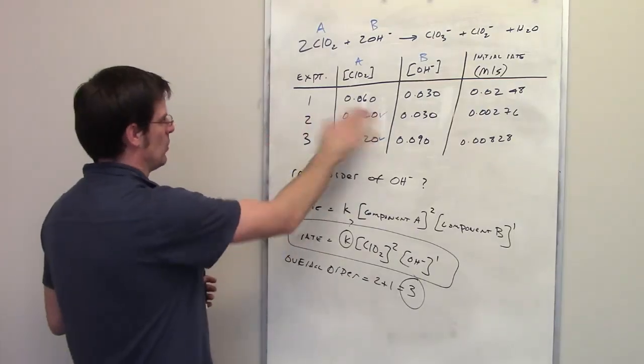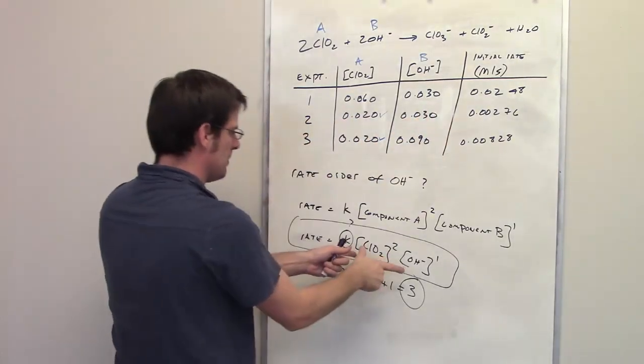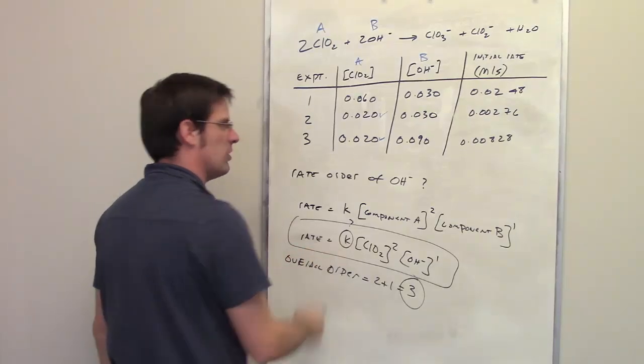all I have to do is go up to the table and pick any of these experiments, 1, 2, or 3, whichever one I like, plug in the numbers that I have and solve for K.